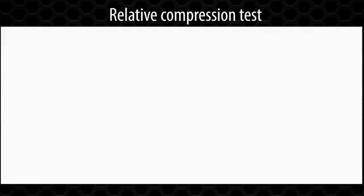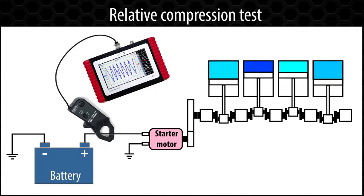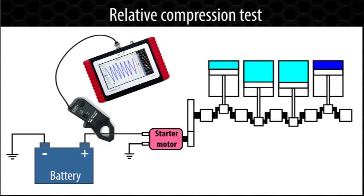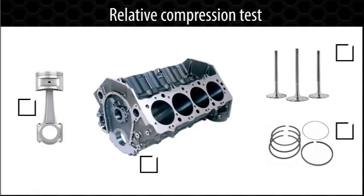For many years, automotive mechanics have been using the relative compression test, which is proven in practice as a good and quick indicator that the engine is operating evenly on all cylinders. Therefore, components such as the pistons, cylinder bores, rings, valves, etc. are all in a good state.